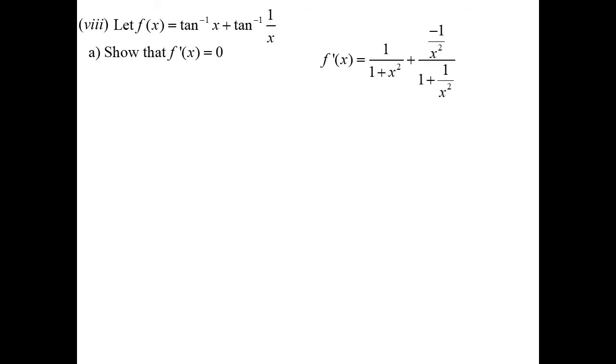Let's do a similar question. Now the function is inverse tan x plus inverse tan of 1/x. Show that the derivative is equal to 0. Differentiating inverse tan x gives 1 over 1 plus x squared. Differentiating inverse tan of 1/x: the derivative of 1/x is minus 1/x squared, over 1 plus (1/x) squared. Multiply top and bottom of that fraction by x squared, and we get minus 1 over x squared plus 1. So they add together to give 0.